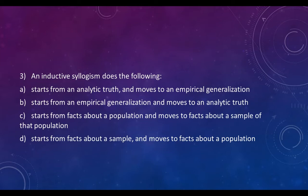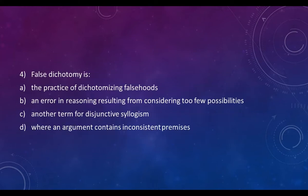So an inductive syllogism does the following. Starts from an analytic truth and moves to an empirical generalization, starts from an empirical generalization and moves to an analytic truth. C, starts from facts about a population and moves to facts about a sample of a population. C, that's the one I was looking for. D is closer, but that's the inductive generalization.